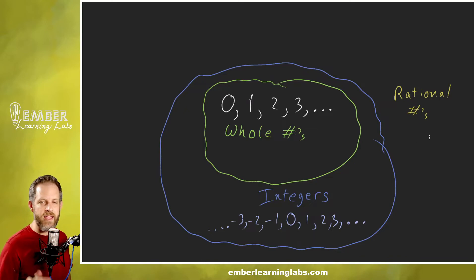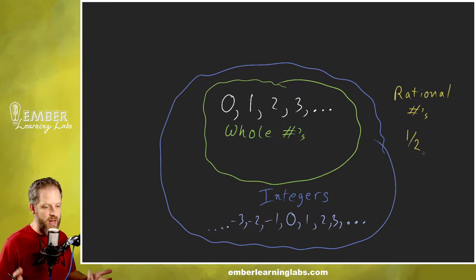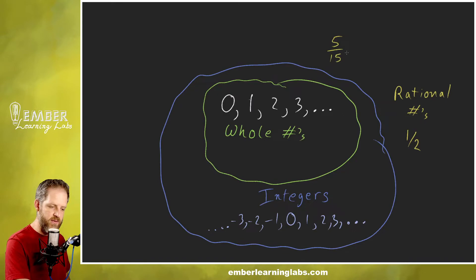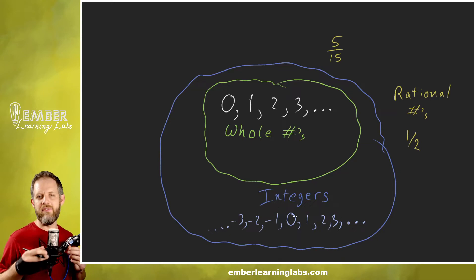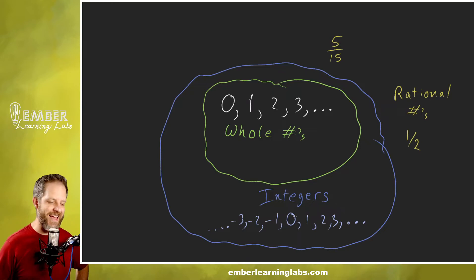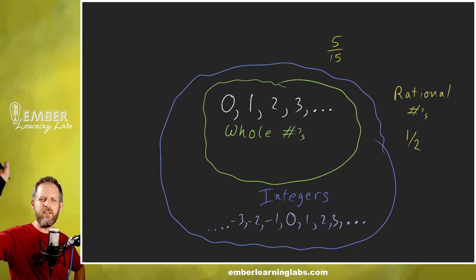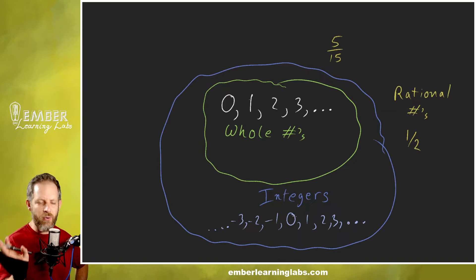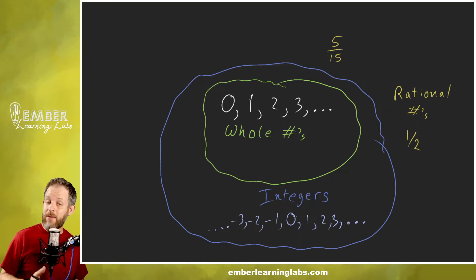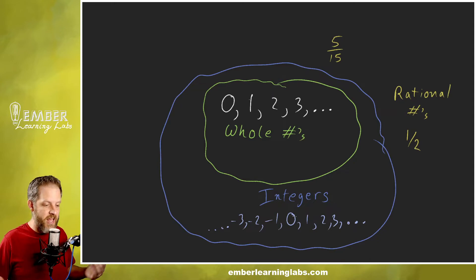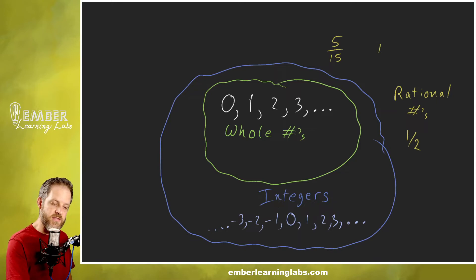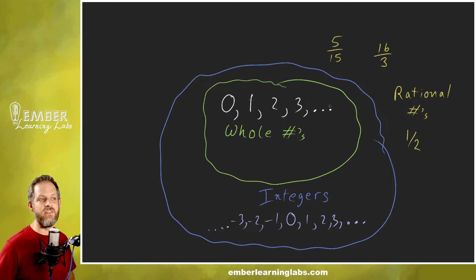Rational numbers are any number that can be written as a fraction. So things like one-half — that's obviously a fraction. Things like five-twelfths, or five-fifteenths — that one could be reduced, but we'll talk about that later. Just because it can be reduced doesn't mean it can't be written as a fraction. What about sixteen-thirds? That's also a rational number — it is literally a fraction, so it can be written as a fraction.